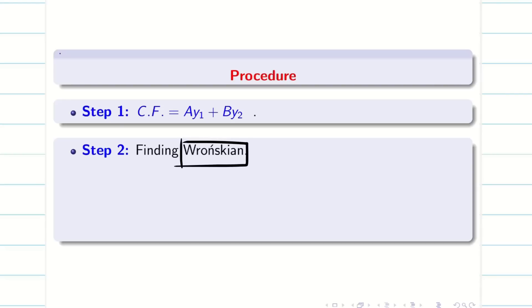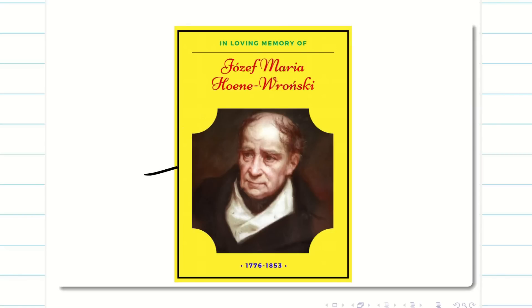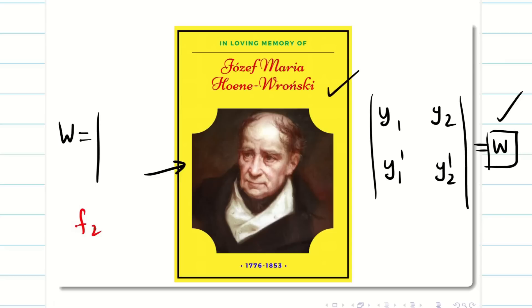My second step is finding Wronskian. Wronskian is nothing but W. What is this Wronskian? Is it a name or a notation? We can see it is the name behind a great mathematician. He is not only a mathematician, he is a physicist, he is a philosopher, he is a lawyer and he played many different roles. He is a Polish mathematician from Poland. He found a great concept called Wronskian.